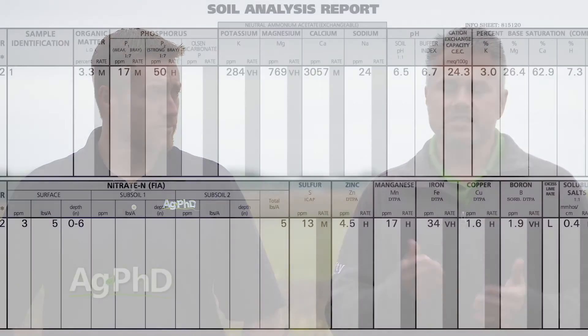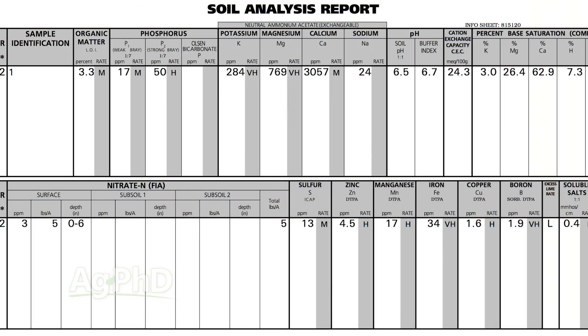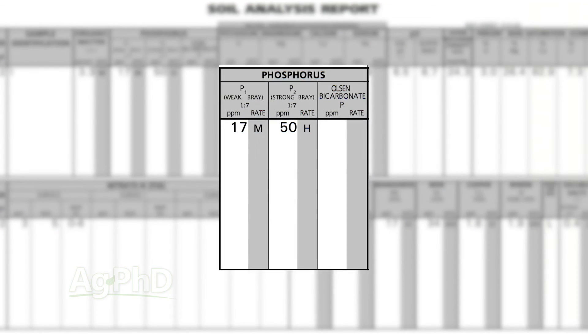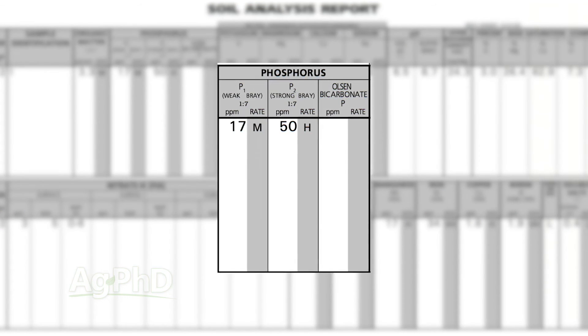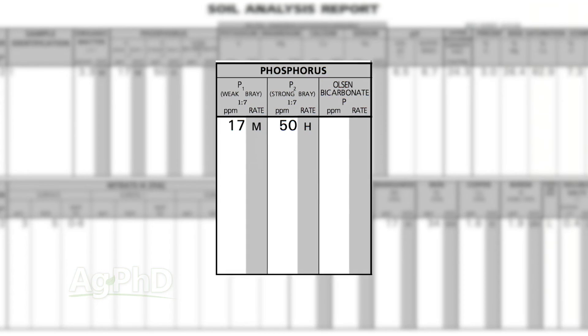The best thing to do in terms of fertility is take a look at a soil test. And when we talk about soil tests, one of the most important things on there is the measure of phosphorus, the amount of phosphorus you have in your soil. But there are different types of phosphorus tests and it can get a little complicated, so we want to talk through that today.